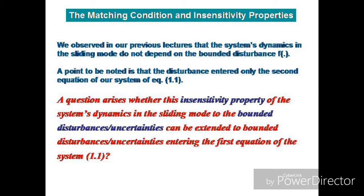From our previous lectures, we observed that the compensated system did not depend on the disturbance — the disturbance had no effect on the dynamics of the compensated system. We also noted that the disturbance appeared in the second equation of the system, and the second equation was the one where control was also applied, so the disturbance was appearing in the same equation where we had control.